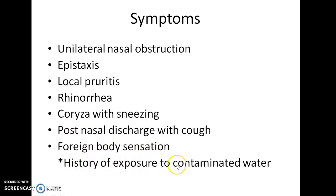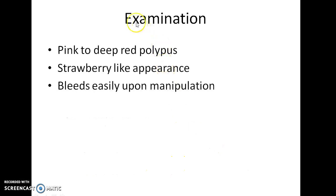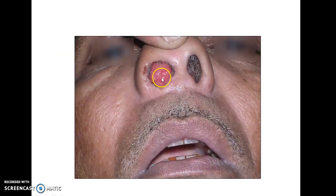There will be a history of exposure to contaminated water. On examination, a pink to deep red polypus is seen. It has a strawberry-like appearance and it bleeds easily upon manipulation. This is how a case of Rhinosporidiosis presents to you.